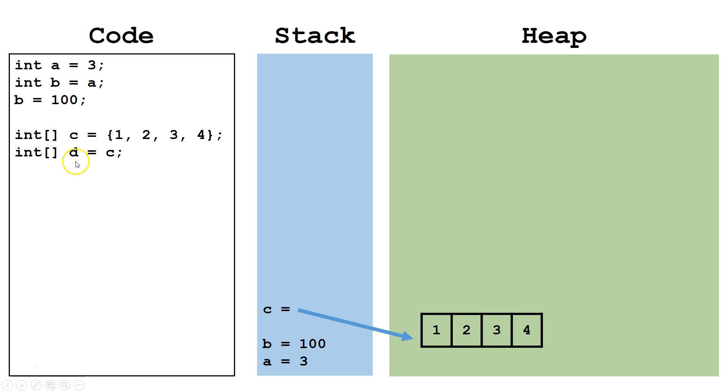Next, we declare a variable d, also of integer array type, and set it equal to C. We're going to copy the data from the stack to d. However, this simply means we are copying a pointer. Now C and D are both pointing to the same object on the heap.